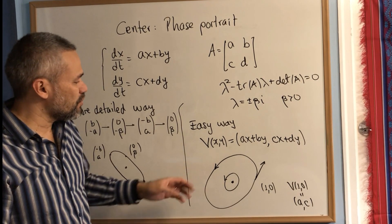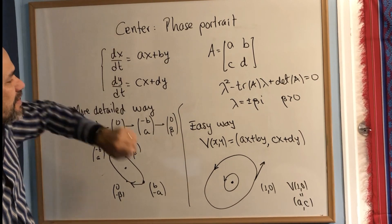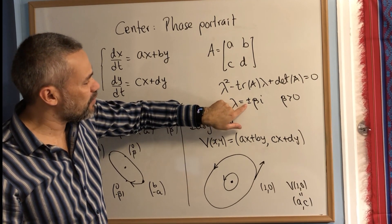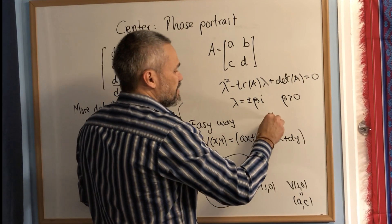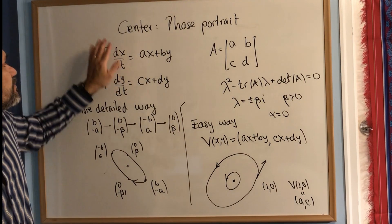In the case that we have a center—a center is when we have a complex root with the real part, which is α—in this case α equals zero. Okay, and then this is it.